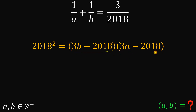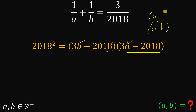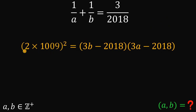Notice that the two factors are almost the same — the only difference is the variable. So if we get an answer of A comma B, the other answer is also B comma A — we can interchange the values of A and B. Also, note that 2018 factors as 2 times 1009, and these are the only prime factors of 2018.